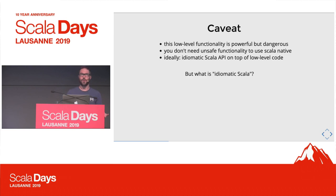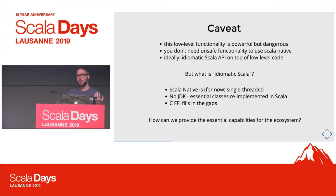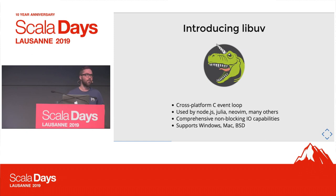But what even is idiomatic Scala when you open this up? Scala Native is single-threaded and the JDK isn't complete — things like reflection and runtime class loading are missing. So you fill in the gaps by using the CFFI. There are awesome C libraries for almost everything the JVM can do, and a lot of cool things the JVM can't. The question is do we pick these off one at a time, or make a bolder move? About two years ago I started experimenting with a C library called LibUV.